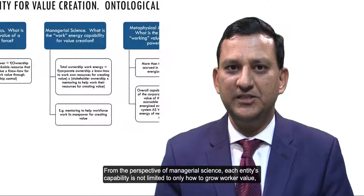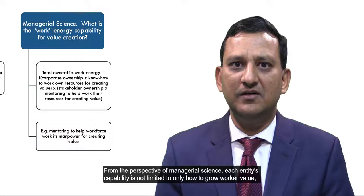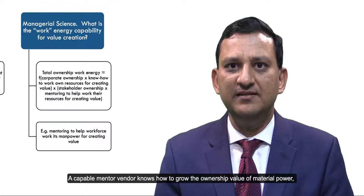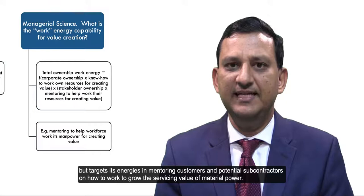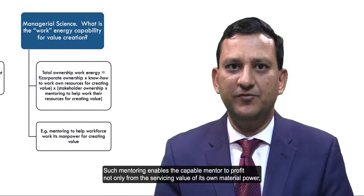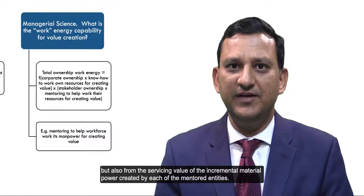From the perspective of managerial science, each entity's capability is not only limited to how to grow worker value, but includes how to mentor other entities on how to work to grow the value they are presently not working on. A capable mentor vendor knows how to grow ownership value of material power, but targets its energies in mentoring customers and potential subcontractors on how to work to grow the servicing value of material power. Such mentoring enables the capable mentor to profit not only from the trading value of its own material power, but also from the servicing value of the incremental material power created by each of the mentored entities.